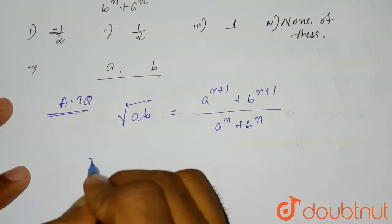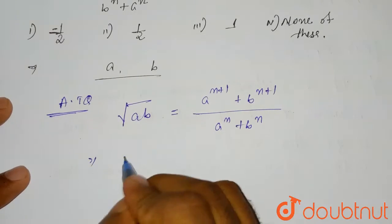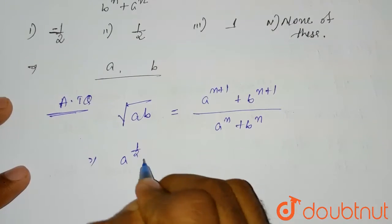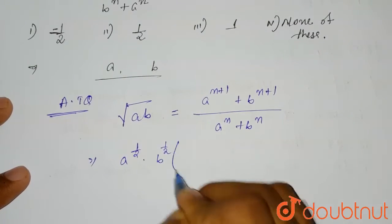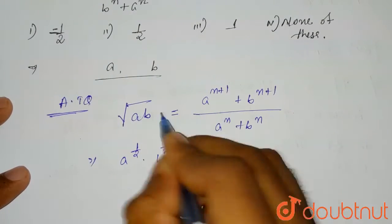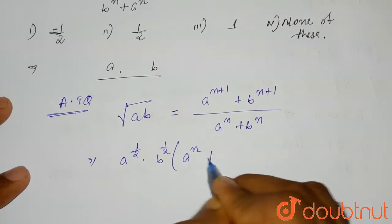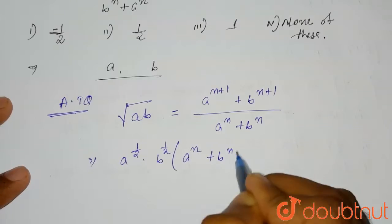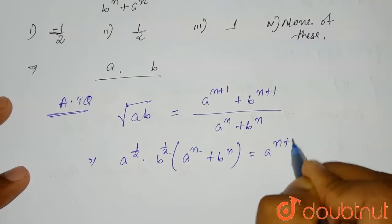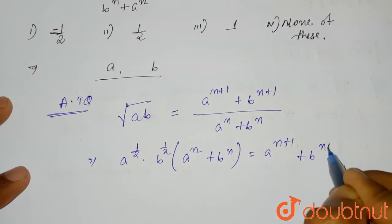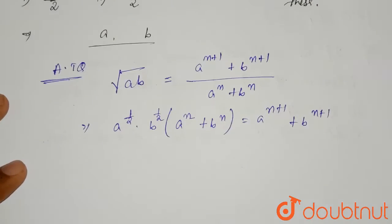So from here, we can write: cross-multiplying gives a^(1/2) × b^(1/2) × (a^n + b^n) = a^(n+1) + b^(n+1).